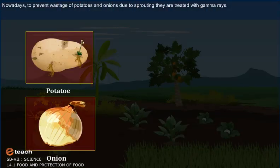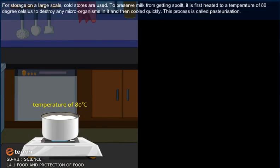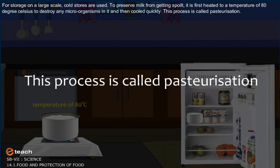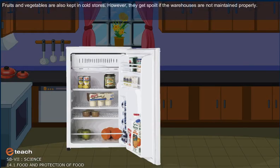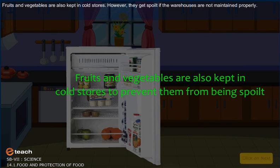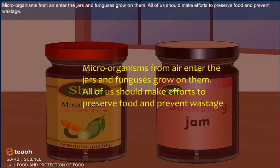Nowadays, to prevent wastage of potatoes and onions due to sprouting, they are treated with gamma rays. For storage on a large scale, cold stores are used. To preserve milk from getting spoiled, it is first heated to a temperature of 80 degrees Celsius to destroy any microorganisms in it, and then cooled quickly. This process is called pasteurization. Roots and vegetables are also kept in cold stores; however, they get spoiled if the warehouses are not maintained properly. Jams or pickles get spoiled if their jars are not properly sealed or if they do not contain the right proportion of sugar or salt, as microorganisms from air enter the jars and fungus grows on them.